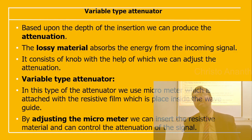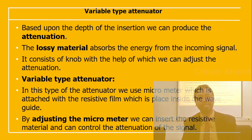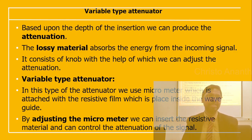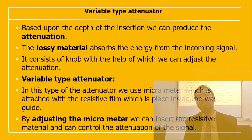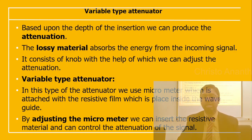Another variable type attenuator uses a micrometer attached to a resistive film placed inside the waveguide. By adjusting the micrometer, you can insert the resistive material further and control the level of attenuation of the signal.